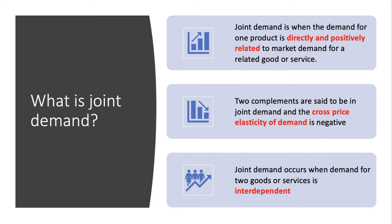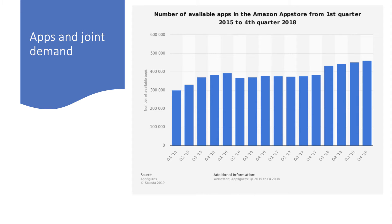Examples include fish and chips, iron ore and steel, and the demand for apps as the take-up of mobile devices increases. This chart shows the growing demand for apps on various platforms such as Google Play and the Apple App Store, as usage of mobile devices and laptops continues to surge.